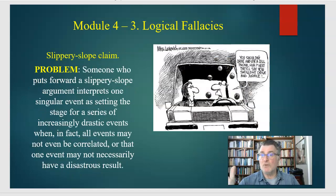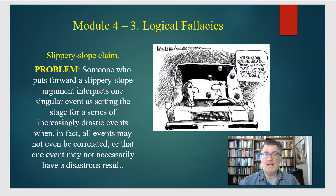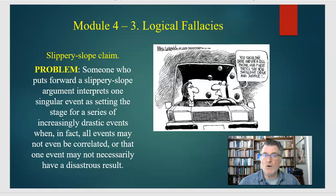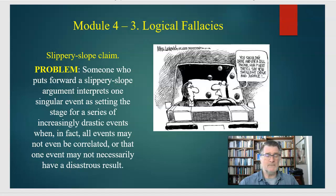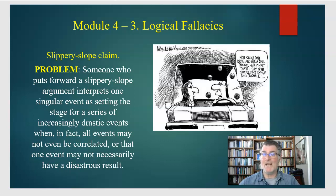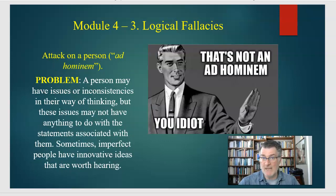Another fallacy is the proverbial slippery slope: interpreting one single event as setting off a series of increasingly horrible things, when in fact there's no proof and no causal relationship. We don't know whether one thing will lead to a disastrous worst result. It's called slippery slope because there's no causal relationship between the first event and any subsequent ones — and furthermore, those subsequent events haven't even occurred.